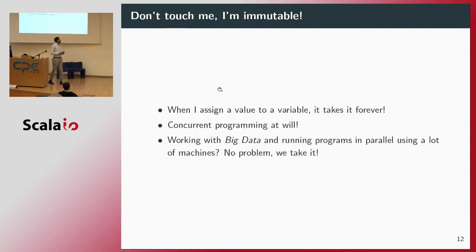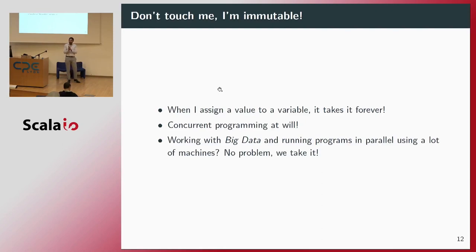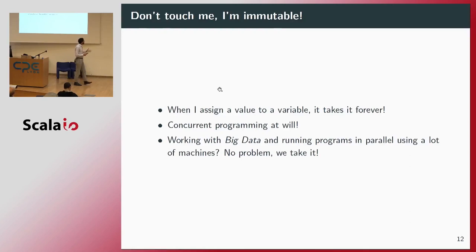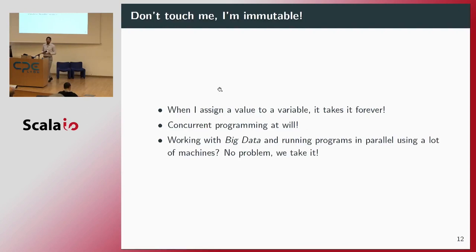Let me talk briefly about the concept of immutability. When I assign a value to a variable, it takes this value forever. We can also have concurrent programs at will — if I have a variable that never changes its value, I don't care how many processors are working on it, nothing will change. And when we work in big data with lots of machines working with the same dataset, immutability is very, very important as a concept to work in distributed systems as well.